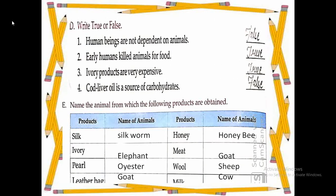Now coming on question D — write true or false. (1) Human beings are not dependent on animals — False, because they are dependent on animals. (2) Early humans killed animals for food — True. (3) Ivory products are very expensive — True. (4) Cod liver oil is a source of carbohydrate — False, because it is a source of vitamins.